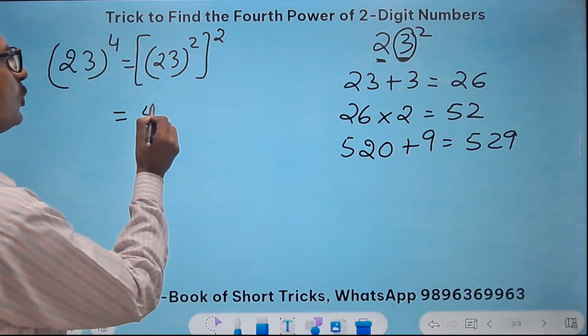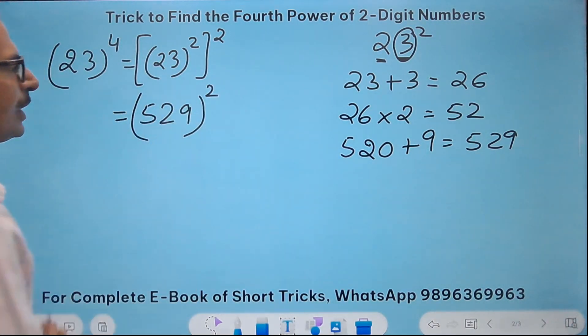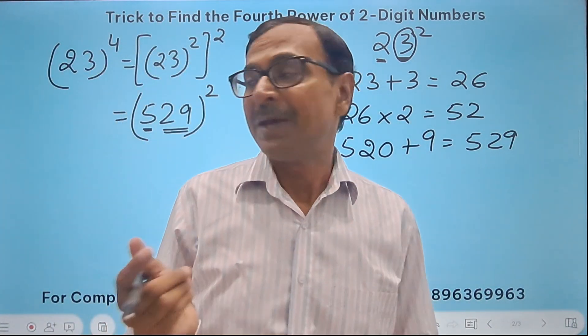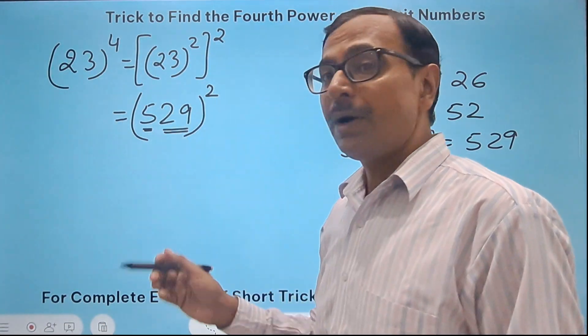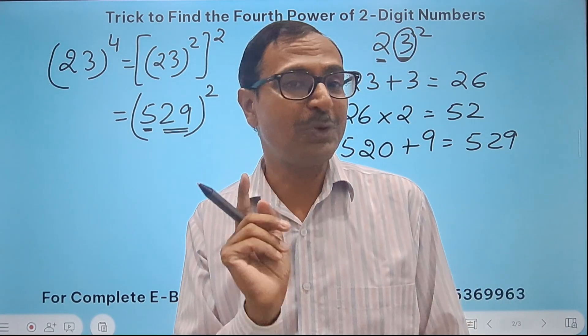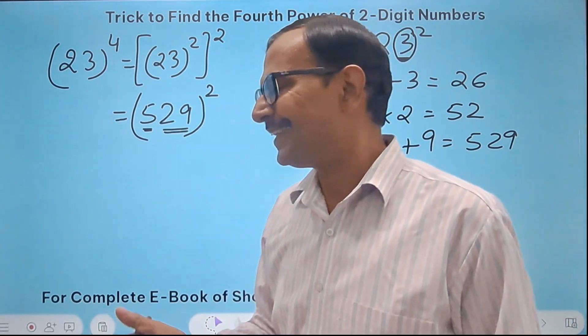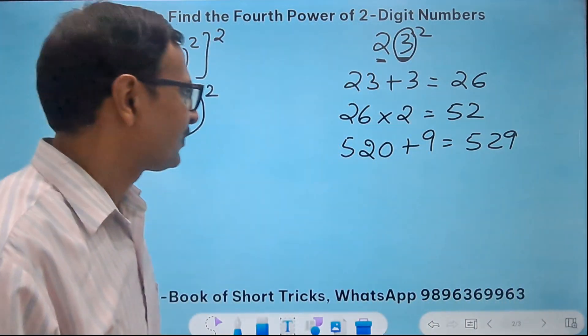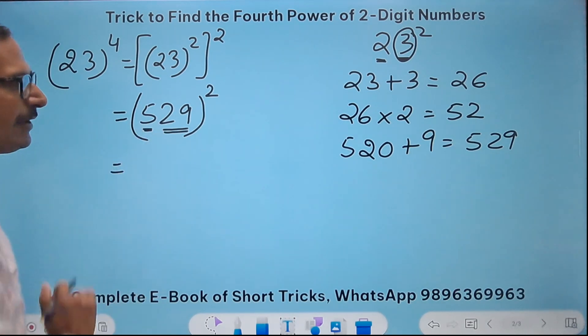Now I have to do 529 square. Now how will I tackle this question now? So I will take 5 and 29. See why did I change it now? Because if I take 52, multiplication by 52 is going to be a tough job. So I'm smart enough right? So I'll take 29 and 5.